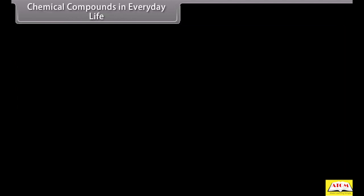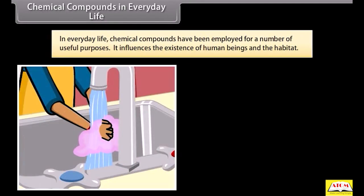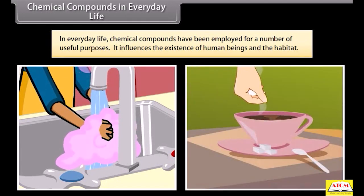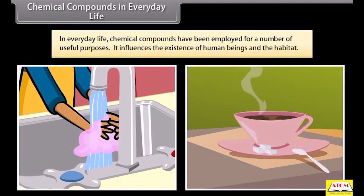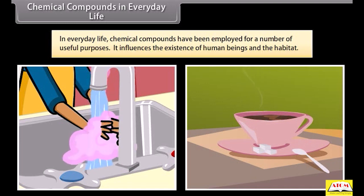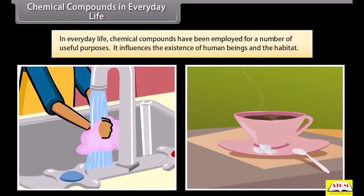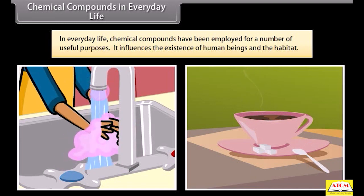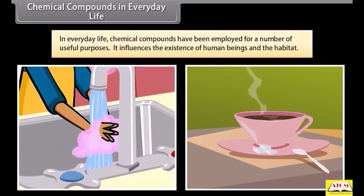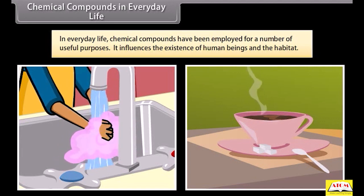In everyday life, chemical compounds have been employed for a number of useful purposes. For example, sugar is used to sweeten tea; soaps are used for washing and bathing purposes. It influences the existence of human beings and their habitat. A number of compounds also find application in agriculture, textiles, medicines, photography, etc.